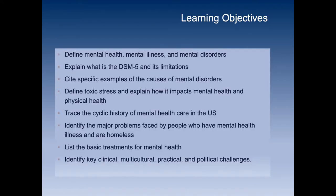We're going to be talking about Chapter 11, Community Mental Health. These are the learning objectives. We're going to look at the difference between mental health, mental illness, and mental disorders. We're going to talk about DSM-5 and its limitations. We'll look at examples of mental disorders, toxic stress, and the history of mental health care in the United States. We'll identify major problems faced by people with mental illness who are homeless, list basic treatments, and identify key clinical, multicultural, practical, and political changes.